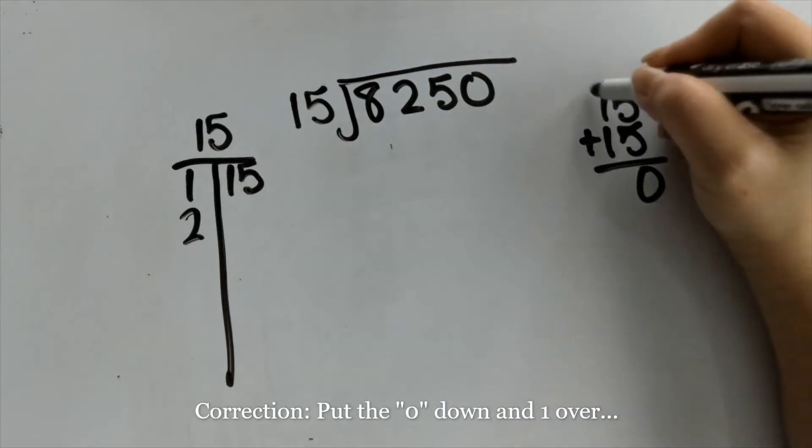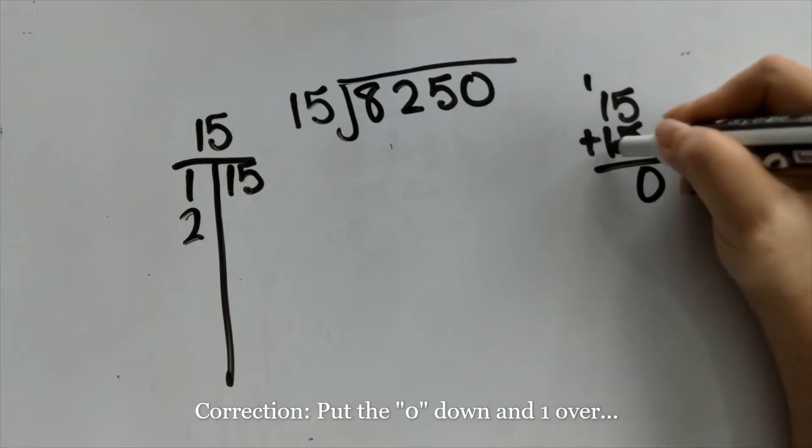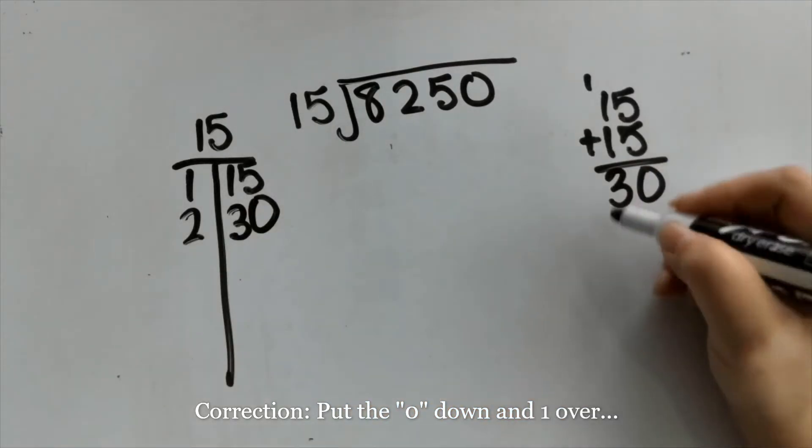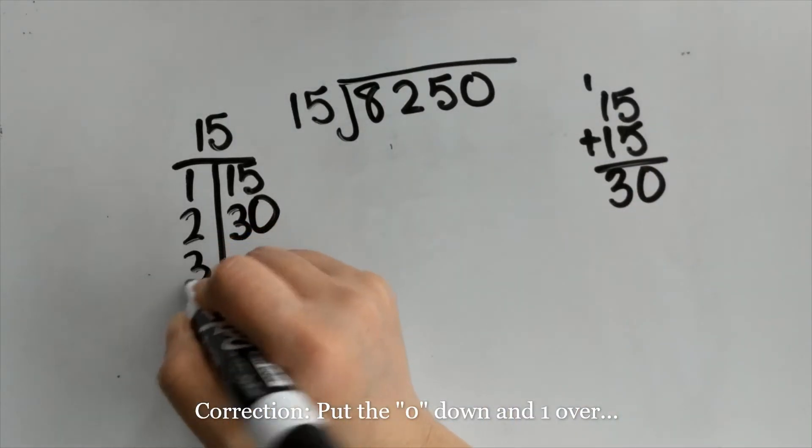So 5 plus 5 is 10, I'm going to put the 1 down and bring the 1 over. 1 plus 1 is 2 plus the 1 is 3, so 2 times 15 is 30.